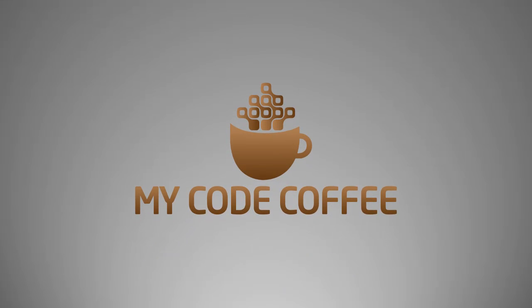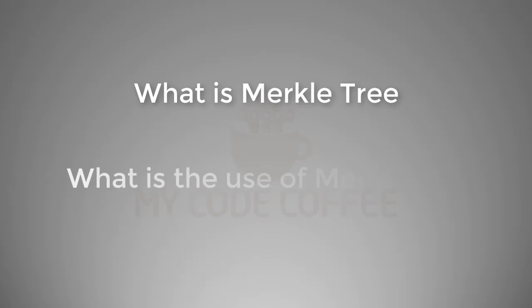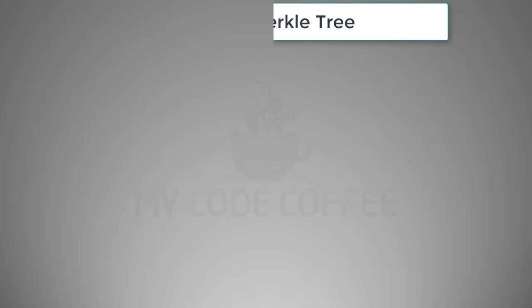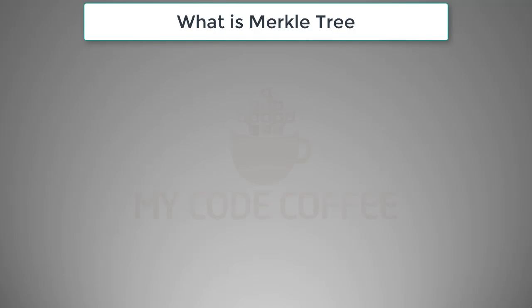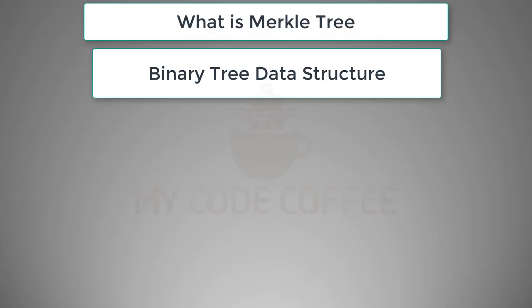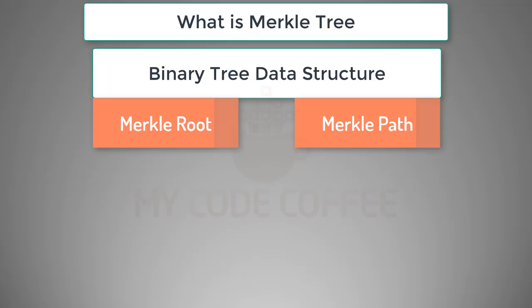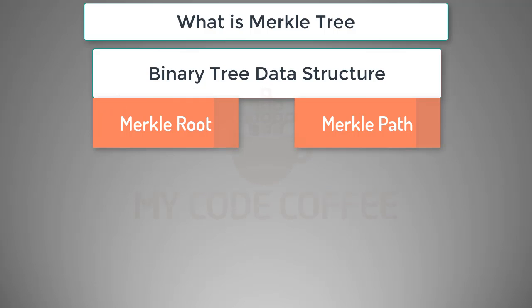Hello and welcome to my Code Coffee. In this chapter we will discuss what is a Merkle tree and what is its use in the world of blockchain. Simply put, a Merkle tree is a binary tree data structure which is used to calculate the Merkle root and derive the Merkle path. In the previous chapter I explained how Merkle root plays a key role in the formation of the chain in the blockchain.